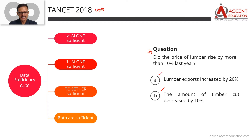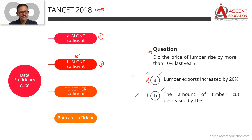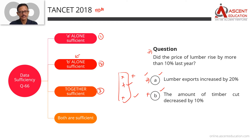The answer options work as follows: Option 1 — if Statement A alone is sufficient and B is not sufficient. Option 2 — if Statement B alone is sufficient and A is not sufficient. Option 3 — if A alone is not sufficient and B alone is not sufficient, but together they are sufficient.